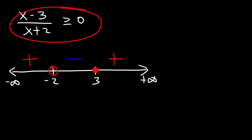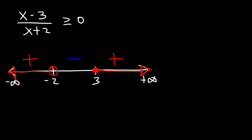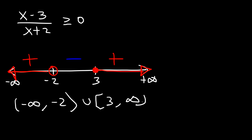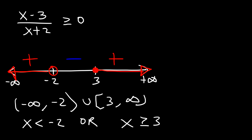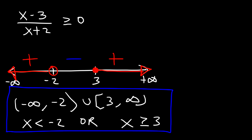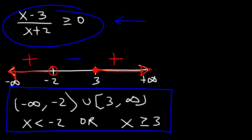Two negatives divided against each other produce a positive result. Since we want the fraction to be greater than or equal to 0, we want the positive values, so we shade that region and the region on the left. The solution in interval notation is negative infinity to negative 2 with a parenthesis due to the open circle, union 3 to infinity with a bracket due to the closed circle. As an inequality: x is less than negative 2, or x is greater than or equal to 3.